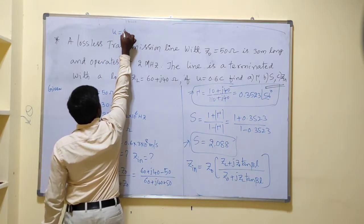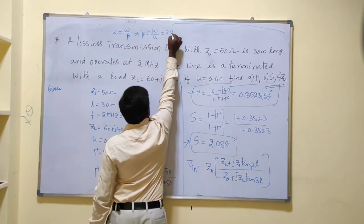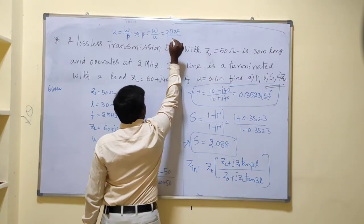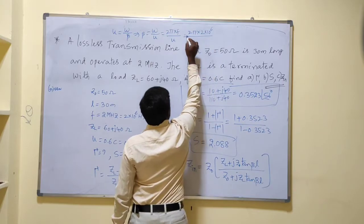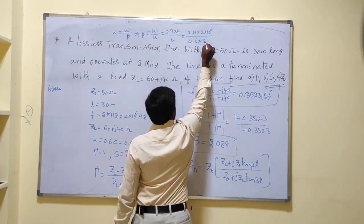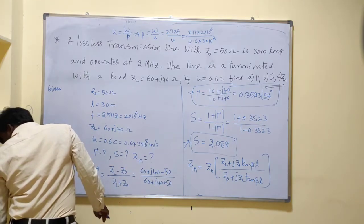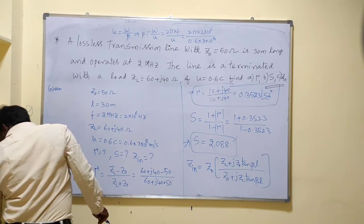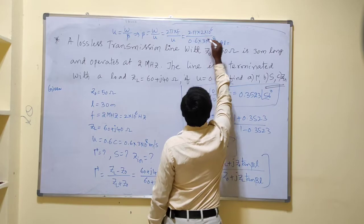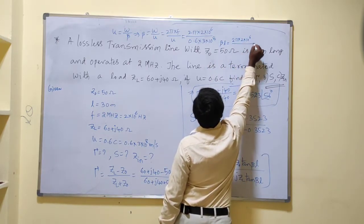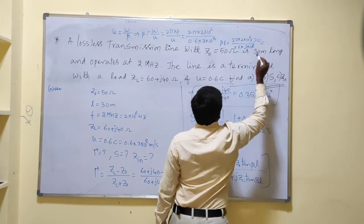The phase velocity u equals omega divided by beta, so beta equals omega over u, which is 2πf over u. With f equal to 2×10^6 Hz and u equal to 0.6 × 3×10^8 meters per second, we can compute beta. Then beta·l is computed using l equal to 30 meters.